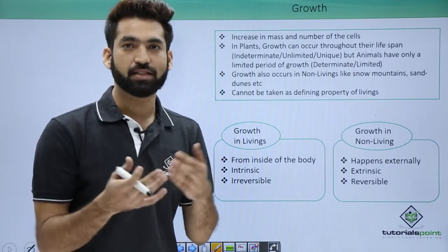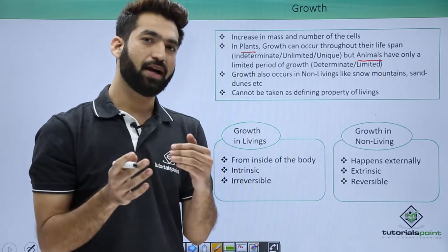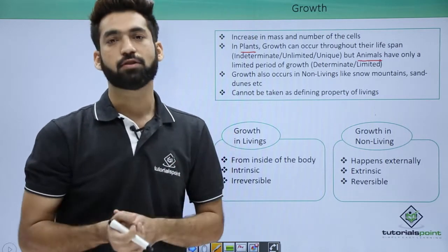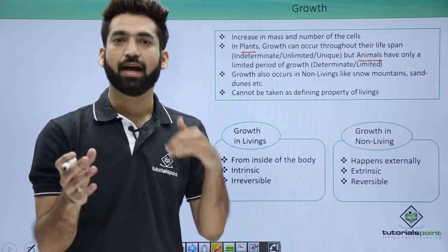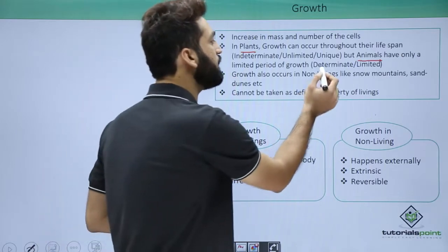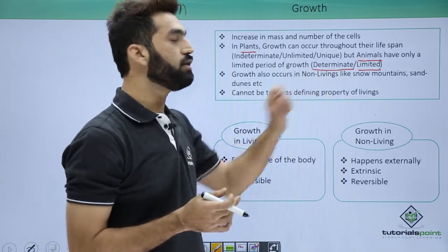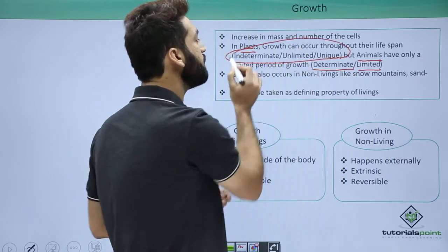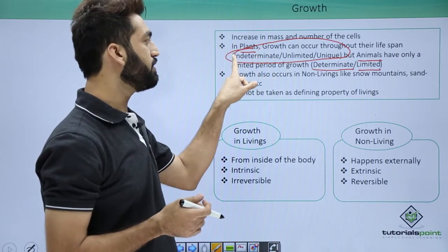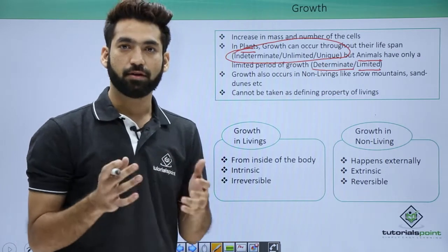When you talk about higher multicellular organisms — plants or animals — the plant can grow for an unlimited time; there is no fixed period after which a plant will stop growing. But in animals there is a definite stage after which animal cells don't grow. There may be repair or regeneration, but growth stops. So animal growth is determinant or limited, while plant growth is indeterminate, unlimited.